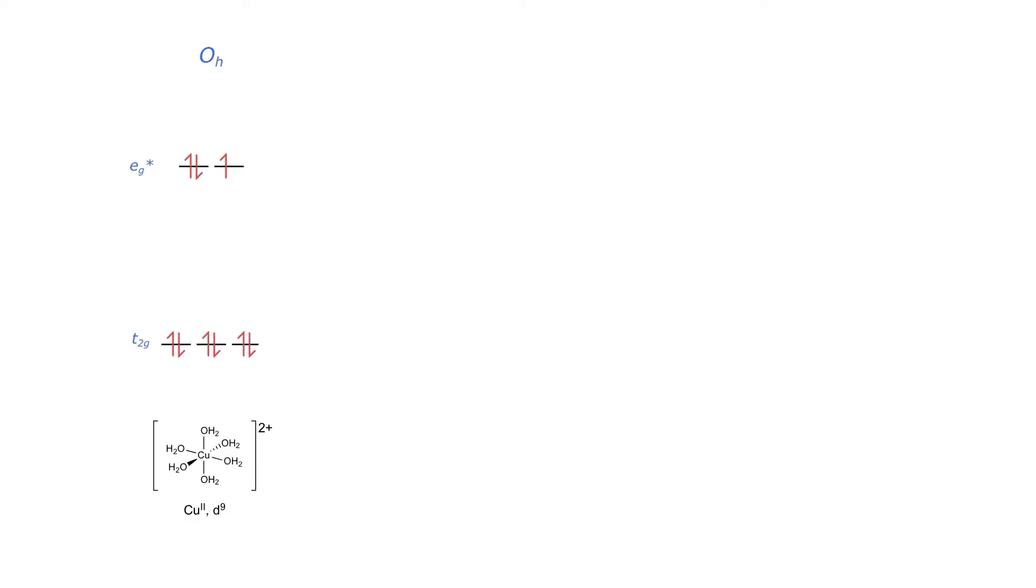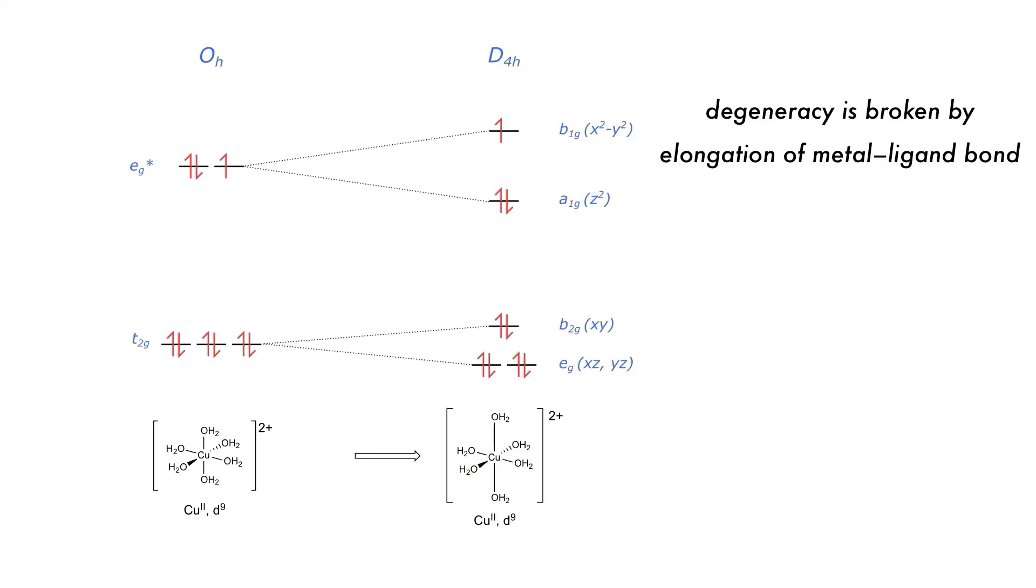On the left, we have a predicted molecular orbital diagram for our copper d9 octahedral complex. We can do an axial elongation, pulling the two water ligands on the z-axis out a little, and consider what happens to the octahedral splitting diagram. What happens is that we have broken the degeneracy of the orbitals. The T2g set split a little, and the Eg set split a lot.